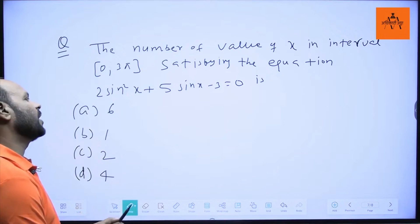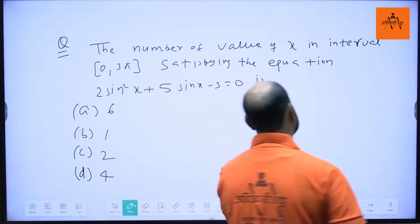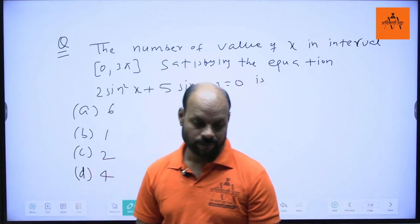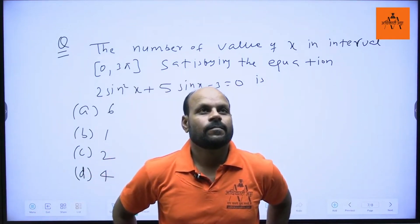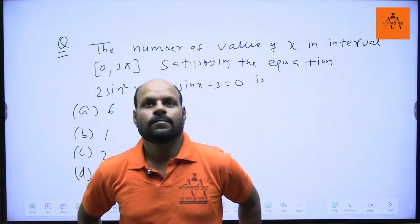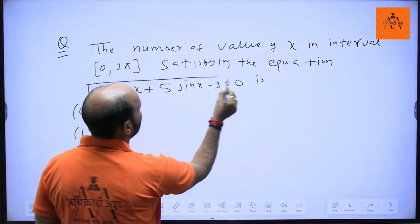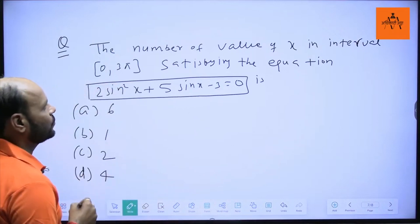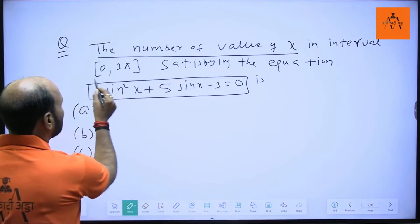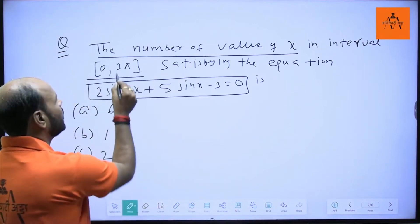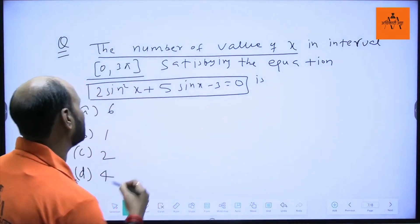We need to solve 2sin²x + 5sinx - 3 = 0. How many solutions does this equation have? The interval is 0 to 3π, which means 0° to 540°.